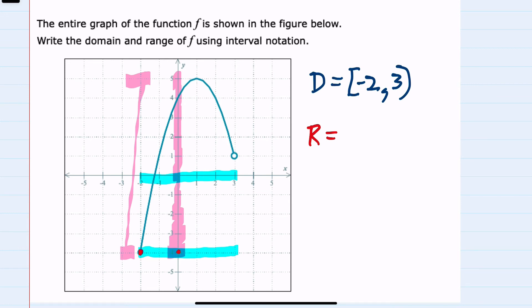Again, that's a solid dot so we are including negative 4 in the range, and the y values go all the way up to 5. They dip back down after that, but it looks like they are including 5. So I have an upper bound where the largest y value is 5 and it appears that is included.